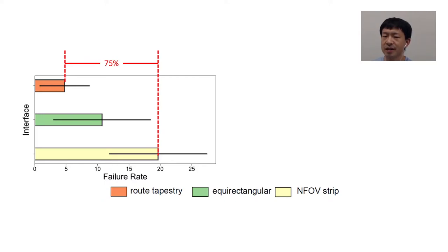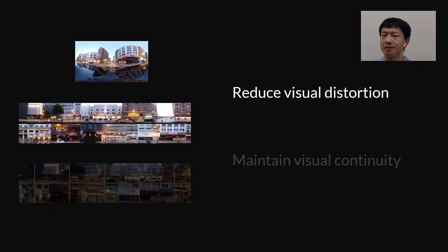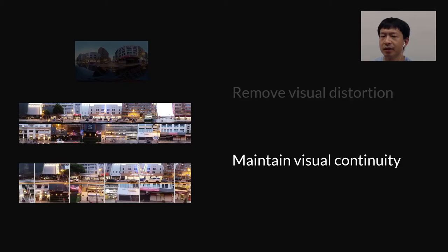We measured participants' task completion time and failure rate. The results show that when using Root Tapestries, participants missed 75% fewer targets than with normal field-of-view strips, and they were able to complete the task 22% faster than with equirectangular previews. Our results highlight the benefit of reducing visual distortion and maintaining visual continuity for navigating 360 virtual tour videos.